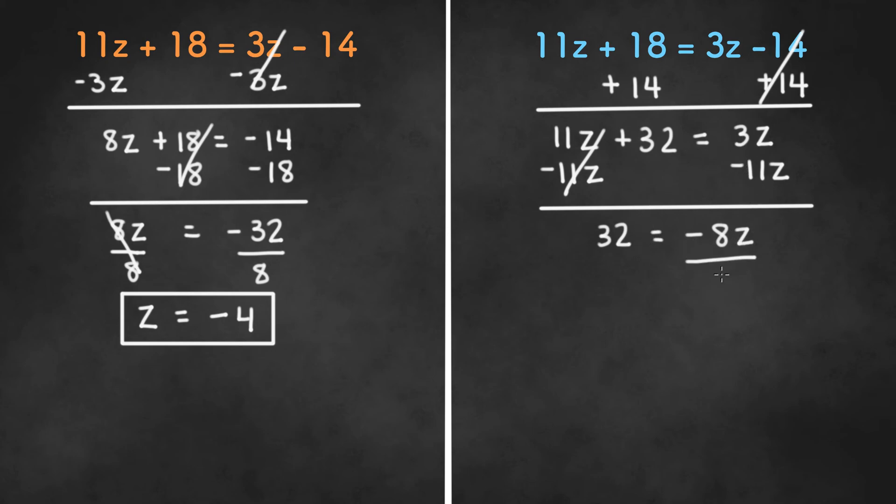Now we can divide by negative 8 on both sides to get our final answer. Once we divide by negative 8, we will get 32 divided by negative 8, which is negative 4 on the left hand side, and z on the right hand side.